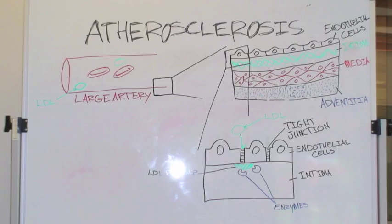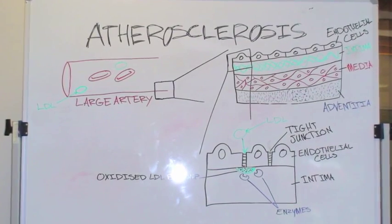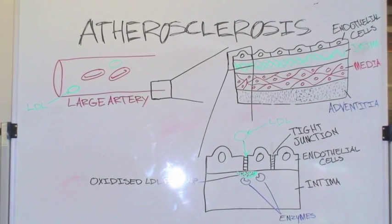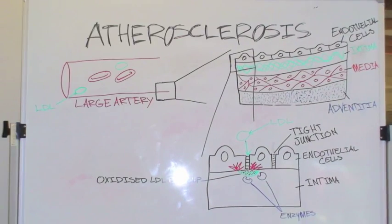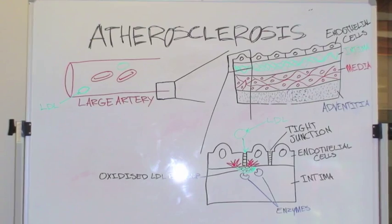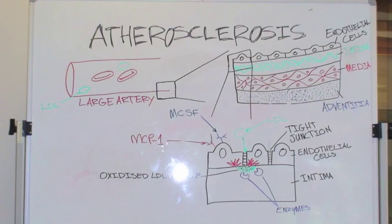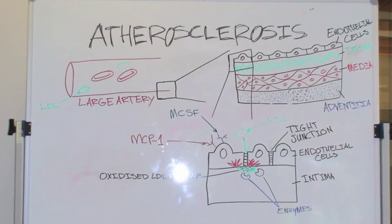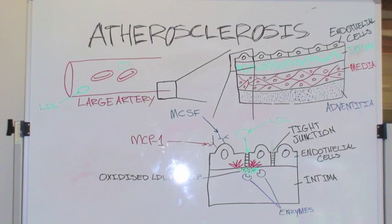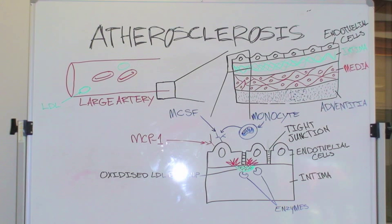Examples of these enzymes include myeloperoxidases, lipooxygenases, NADPH oxidases, and nitric oxide synthases. Oxidized and partially oxidized LDL damages the endothelial cells, causing them to produce adhesion molecules such as macrophage chemotactic protein 1, interferon gamma, integrins, selectins, and macrophage colony stimulating factor, all of which attract monocytes from the blood to the lesion site.